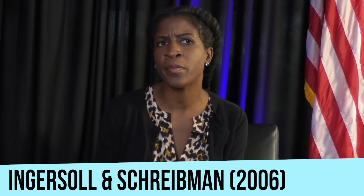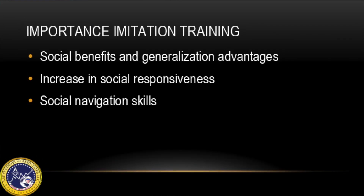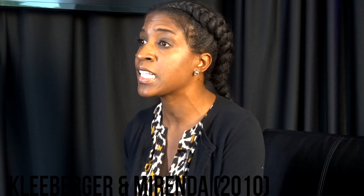Here are some examples. In the Ingersoll and TribeMed article, they highlighted social benefits and generalized advantages to teaching imitation during naturally occurring opportunities. The treatment consisted of five phases, starting with recognition of imitation or contingent imitation and ending with imitation of novel actions. For some participants, there was a significant increase in spontaneous language.